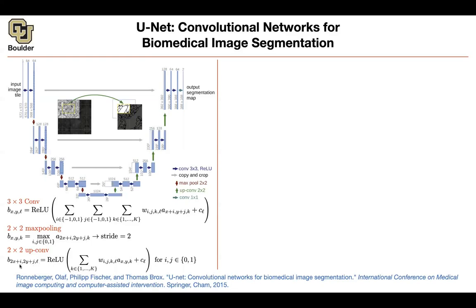This is exactly what is coded under the hood if you use TensorFlow, PyTorch, etc. So I owed you two things: one was what is a deconvolution, and the other is the loss function. What is the loss function for image segmentation?